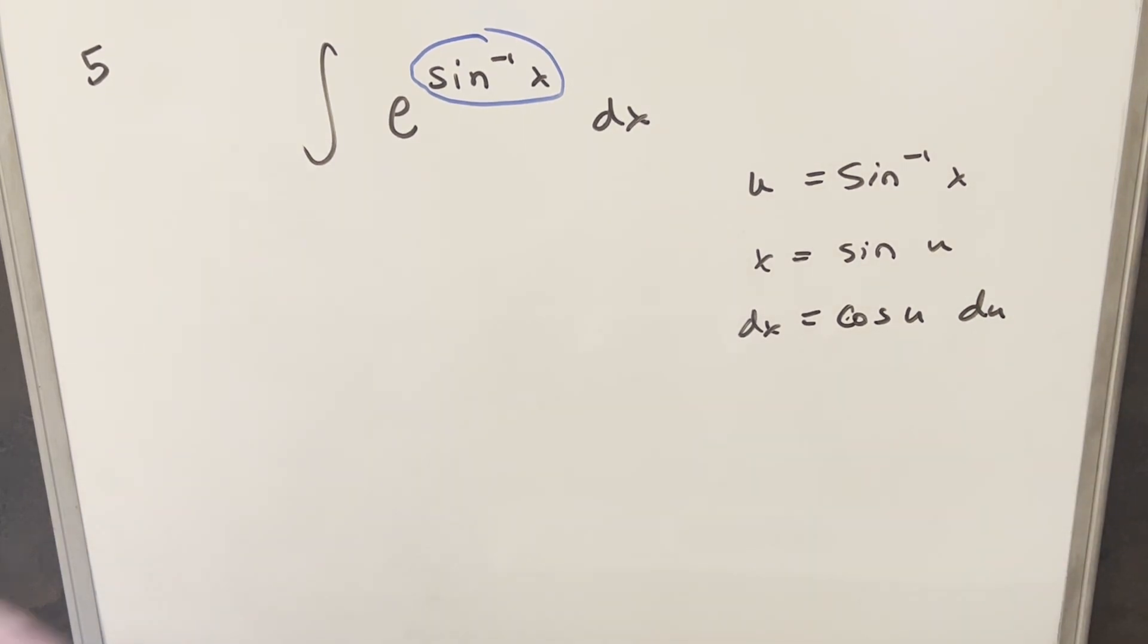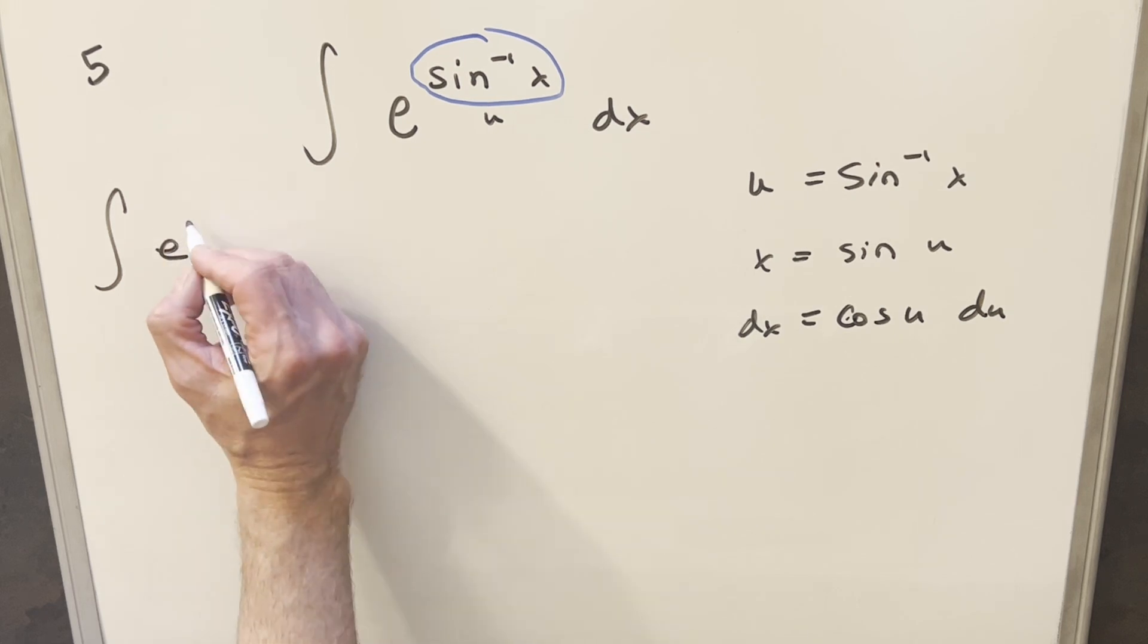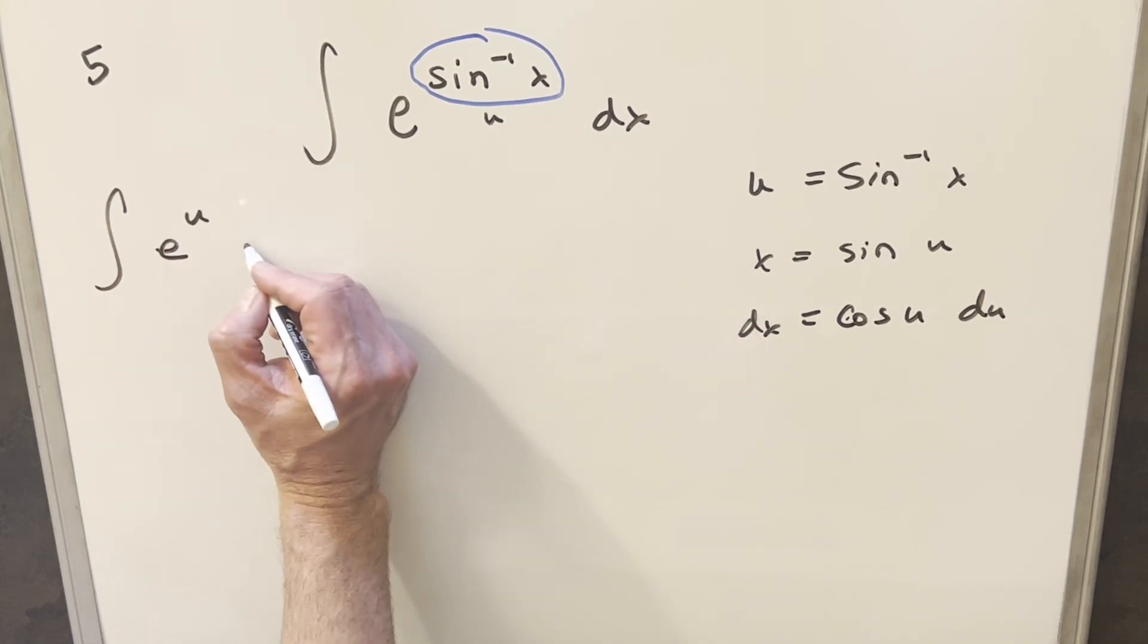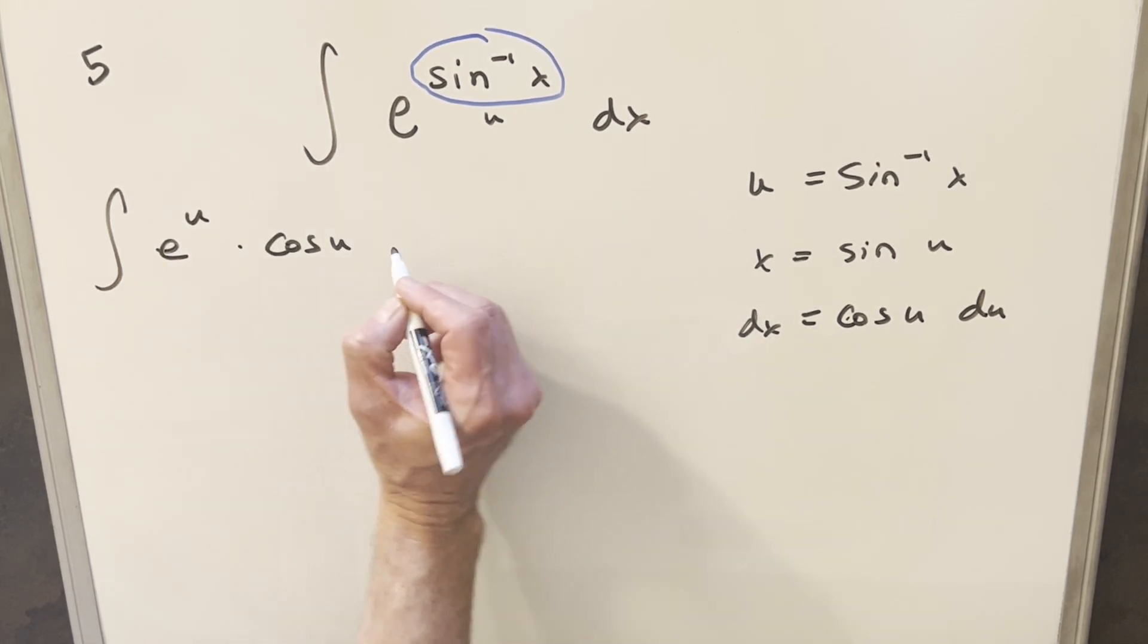And then we can just go ahead and substitute. So when I rewrite this, this thing here is just becoming u. So we have, this is just going to become e^u, and dx is going to be just cosine u, du.